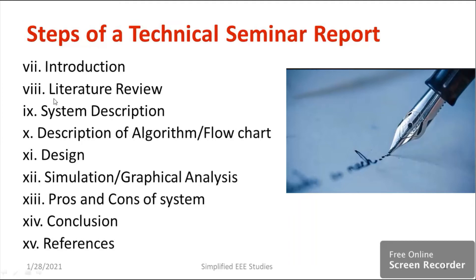Moving on to the literature review. Its purpose is to understand previous approaches and methods. For example, if you are using maximum power point tracking algorithms in a solar photovoltaic system, you might study different algorithms like Perturb and Observe, incremental conductance, and FSI-based algorithms. You can download many journal and research papers, highlight relevant information, and understand the status of previous work. You can also refer to different websites. That is called literature review.